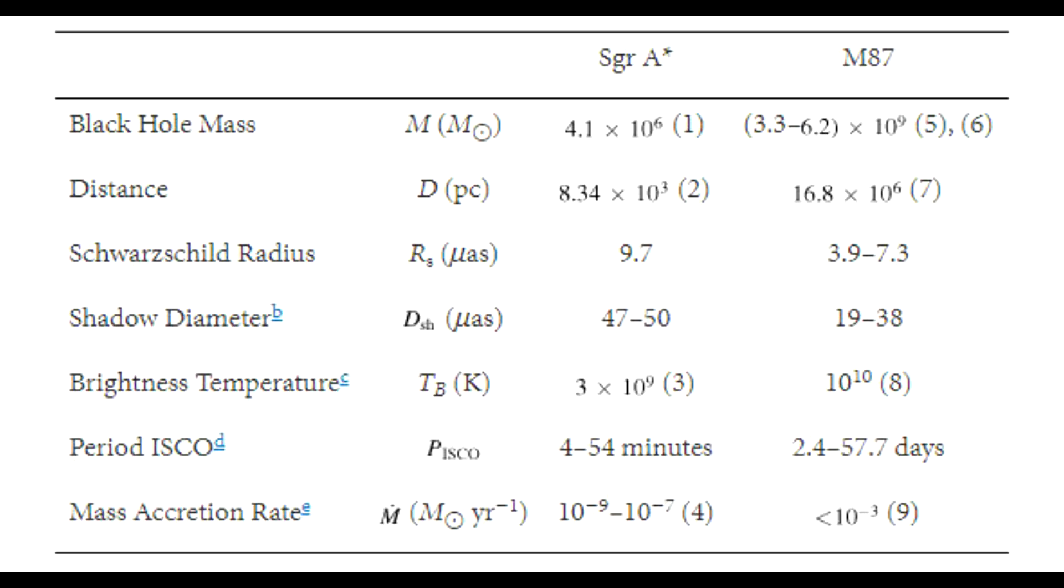Now from Earth, if we look at the moon and the sun, they both appear roughly half a degree in size on the sky, but the sun is 400 times bigger, but it's also 400 times further away. Similarly, the black hole in M87 is about 1000 times bigger, but the galaxy is about 2000 times further away.